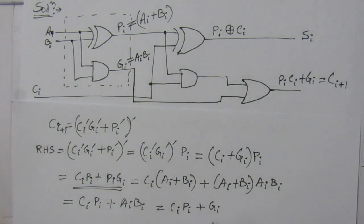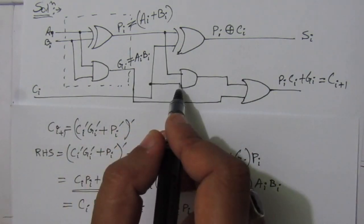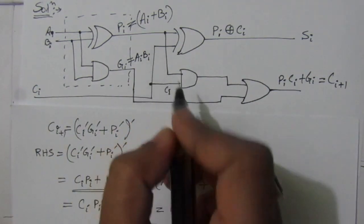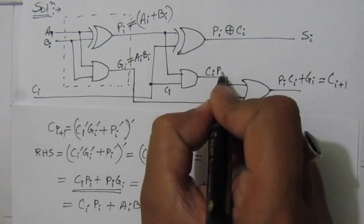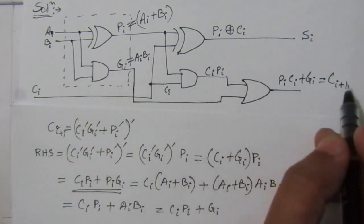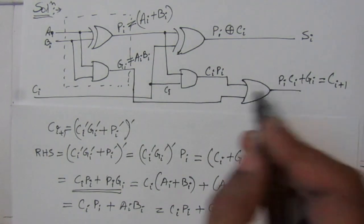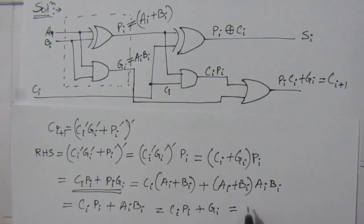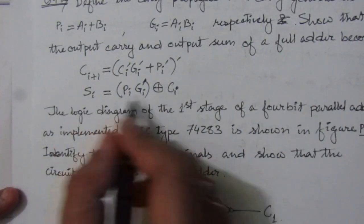This is the next carry output. Comparing with the expression, we can write it as C_{i+1}, which is the left hand side of this equation. So the first part — proving C_{i+1} — is complete. Now we also have to show that S_i equals P_i·G_i dash XOR C_i.